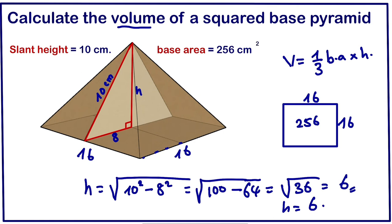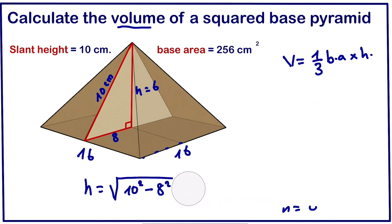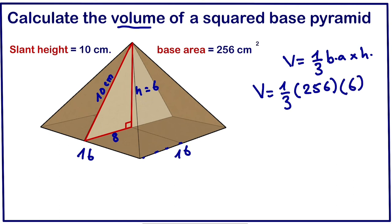We can now calculate the volume of our pyramid. So the volume is one-third base area. The base area is 256 times the height is 6.